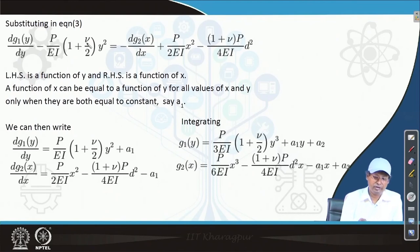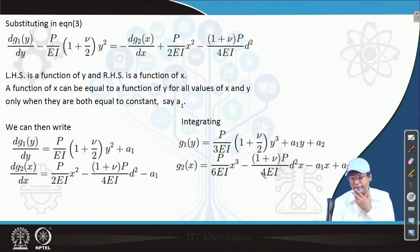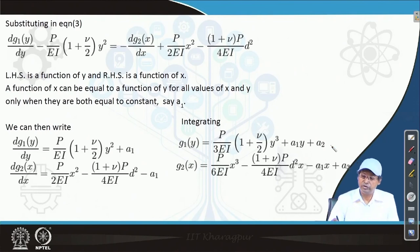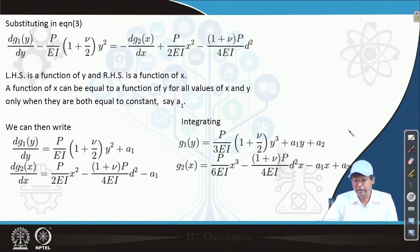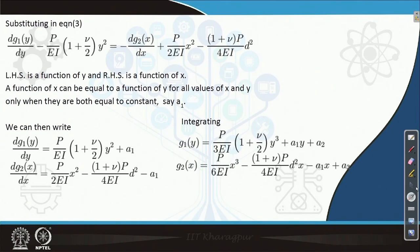We set the left side equal to constant a1 and the right side equal to constant a2. Rearranging and integrating, we obtain g1 and g2, with two more integration constants a2 and a3 — giving us 3 unknowns total. To find these 3 unknowns, we apply boundary conditions in terms of the displacements u and v.